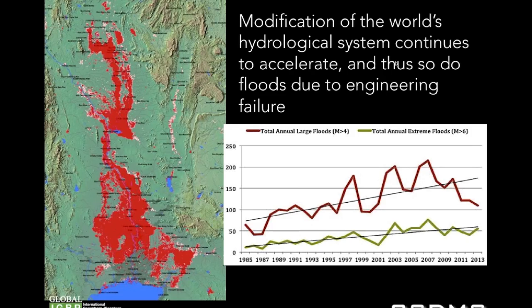In our climate world, we expect the atmosphere to warm up — which it is — and to hold more moisture — which it can — and therefore produce more intense rainfall, which it does, producing an intensification of the hydrological cycle. In dry areas it also produces more erratic rainfall, increasing the number of floods. We would like to tell a climate story, but in fact many times these floods occur because of engineering failures. Many of the large floods we see have an engineering side to them — something failed.